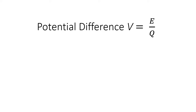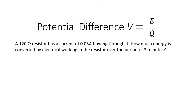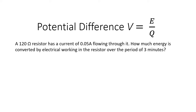Potential difference equals energy converted divided by charge. Here's a question: a 120 ohm resistor has a current of 0.05 amps (50 milliamps) flowing through it — how much energy is converted by electrical working in the resistor over 3 minutes? 'Electrical working' just means how much energy is being converted by electricity doing work.